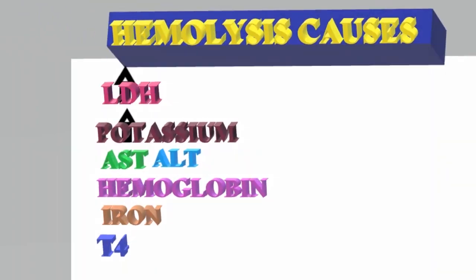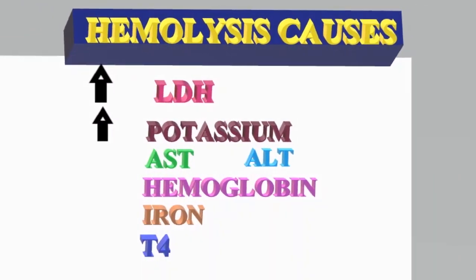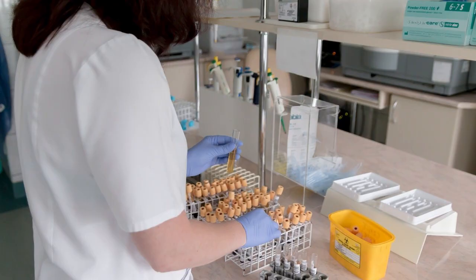Inappropriate blood collection tube for specific analytes is also a concern. Regarding processing and centrifugation — insufficient clotting time: the sample should be clotted before centrifugation. Clotting takes 30 to 60 minutes at room temperature. Clot activators allow shorter clotting time.